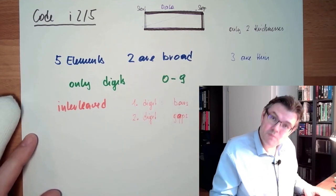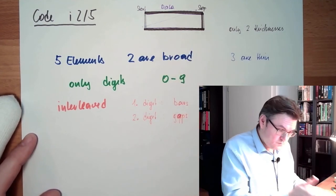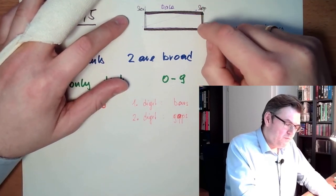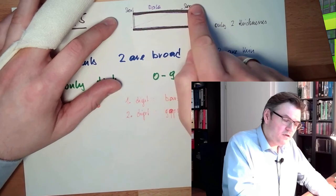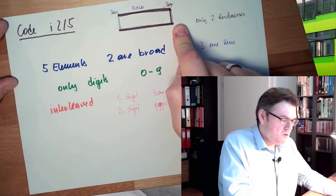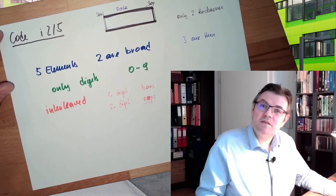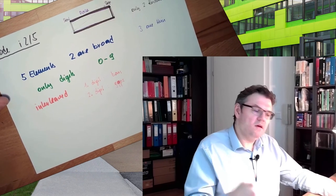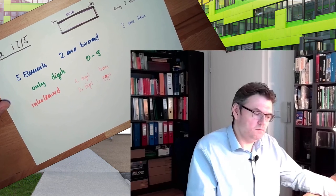So if you see a barcode which has these black bars above and below, there's a pretty good chance this is this interleaved two of five. This is simply to prevent read issues.